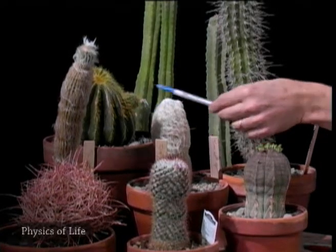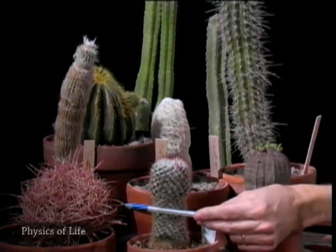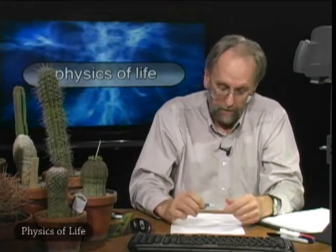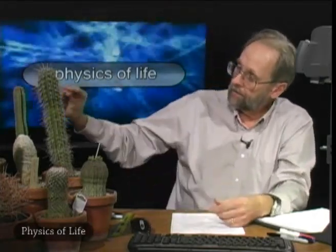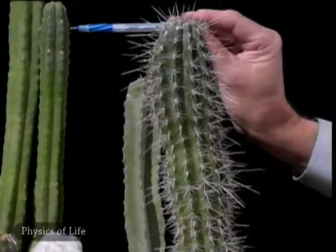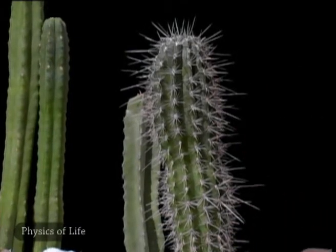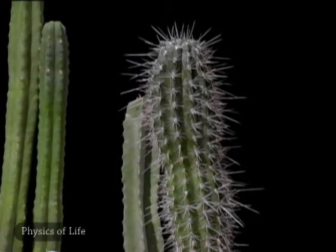This cactus is somewhat spherical as well. But other of these succulent plants, like this large cactus over here, are tall and cylindrical. And in some instances, if we look at this cactus or this one, there are some interesting fluting patterns along the surface of the plant. Some are relatively smooth. So there's quite a bit of interesting variation in the shape of these succulent plants.